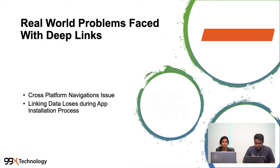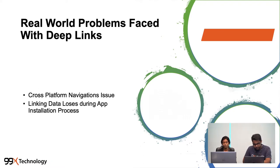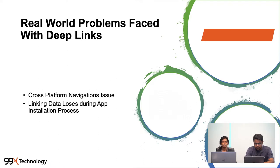Even though the concept of deep linking is clear, it has some issues in real-world scenarios. The first is a cross-platform navigation issue, where the same link won't be working in iOS and Android at the same time. The second is linking data loss during the installation process. If you haven't installed the app, it redirects to the App Store or Play Store for installation, but after installation the user will be left without being redirected anywhere because it has lost its linking data within the deep link.